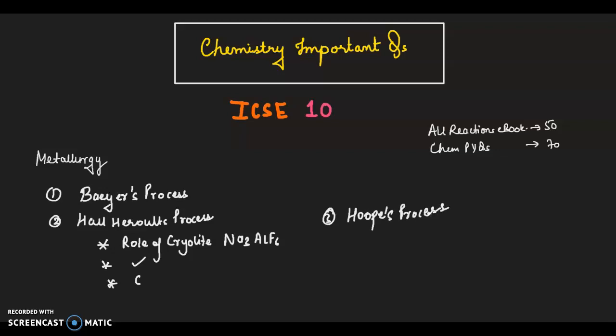That is specifically used to get the purest form of aluminium in case there is any impurity left, to get the purest form 99.9 percent.